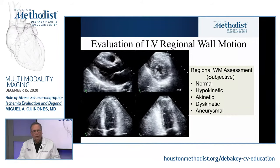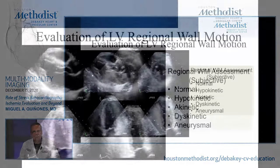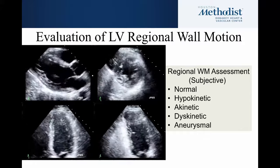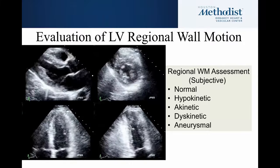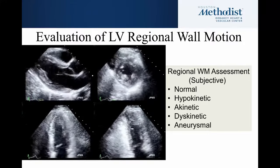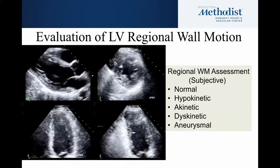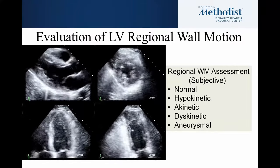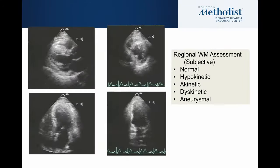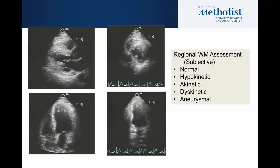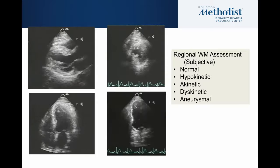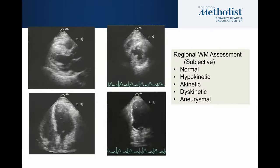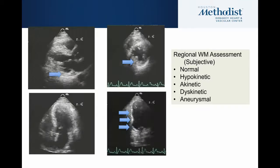As with our previous lecture on left ventricular function, we look at global and regional wall motion. Traditionally we describe regional wall motion as normal, hypokinetic — in our own lab we differentiate mild hypo from moderate or severe — akinesis, dyskinesis, and frank aneurysm. Here we have a normal left ventricle, and here a heart with some segmental abnormalities.